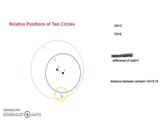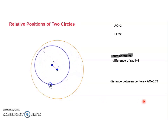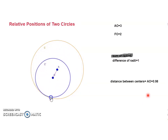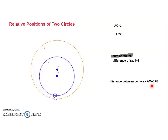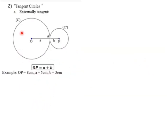Here is a simulation of internally disjoint circles. You can see the distance between the two centers is OA, and the difference between the two radii is 1. Wherever I move the circle, it remains internally disjoint — this distance is always less than 1, which is the difference between the two radii.